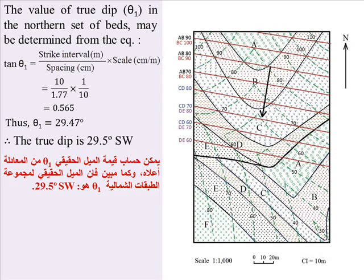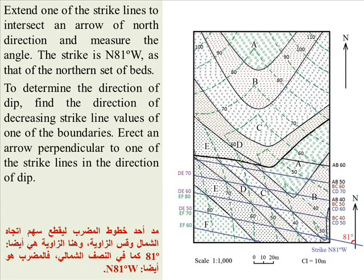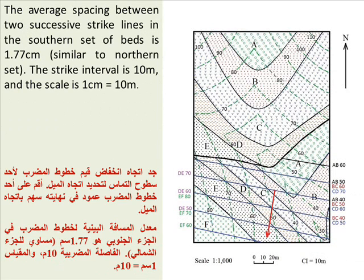Therefore, the true dip is 29.5° southwest. For the southern set of beds, write the symbols and three strike line values for each boundary. Extend one of the strike lines to intersect the north direction arrow and measure the angle — the strike is N81°W, the same as the northern set. Find the direction of decreasing strike line values to determine the direction of dip, and erect an arrow perpendicular to the strike lines. The average spacing between two successive strike lines in the southern set is also 1.77 centimeters.